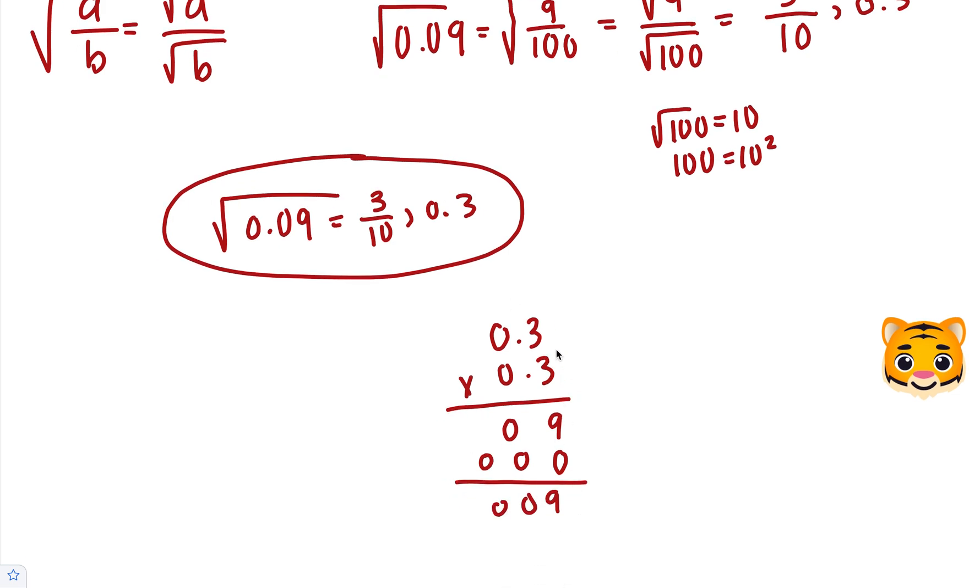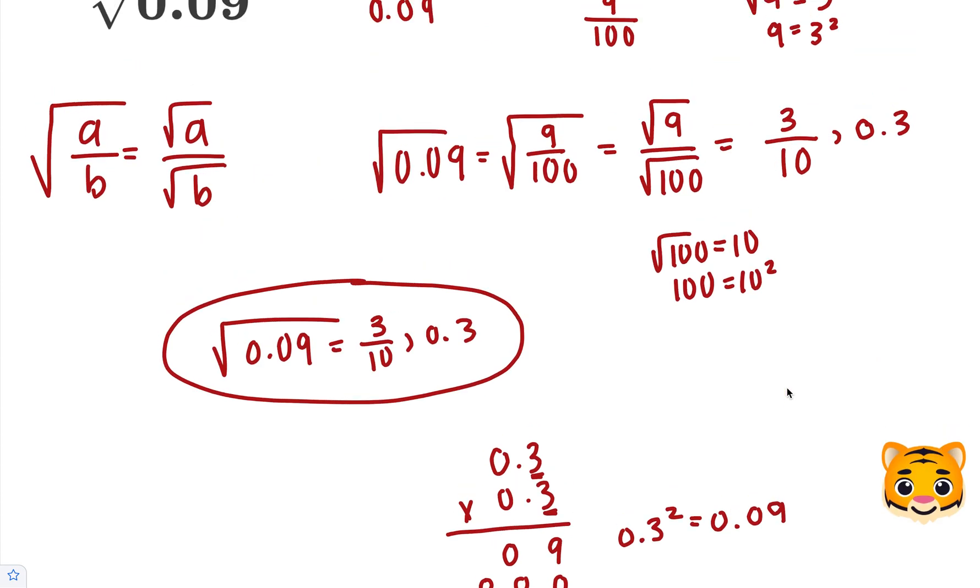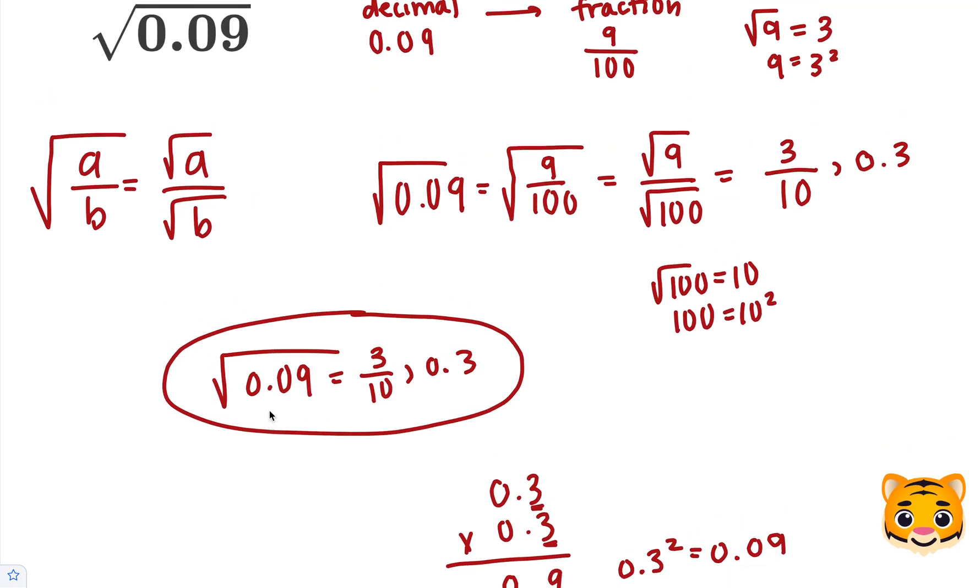We have to move our decimal place two spaces backwards, because we have two digits after the decimal. 1, 2, and then we can see that 0.3 squared is 0.09, so our answer is correct. 0.09 is equal to 0.3 squared, or the square root of 0.09 is equal to 0.3.